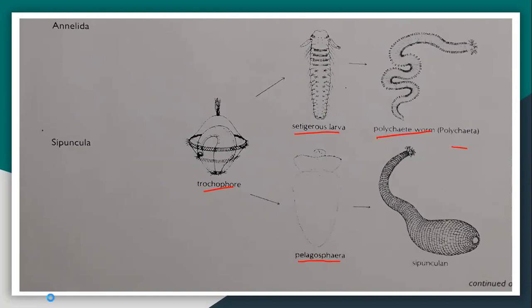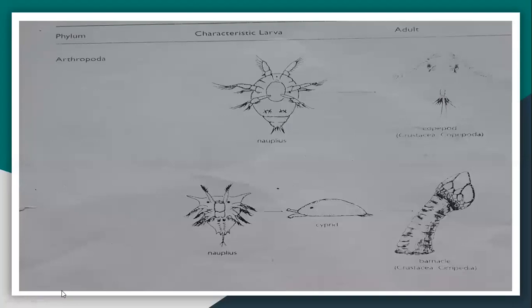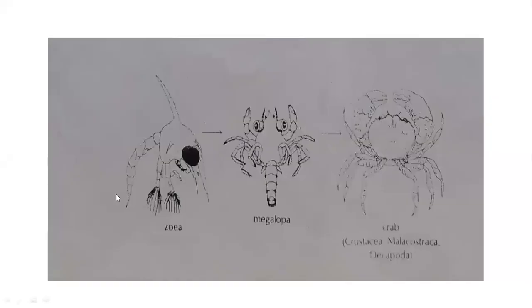Next is arthropoda, which is the largest phylum in the animal kingdom — about 70 percent of all animals are arthropods. Arthropoda has different types of larvae. The nauplius larva is the larval stage of copepoda adults, and also of barnacles, which are crustaceans. Zoea and megalopa larva are also arthropod larvae that become crabs in the adult stage.